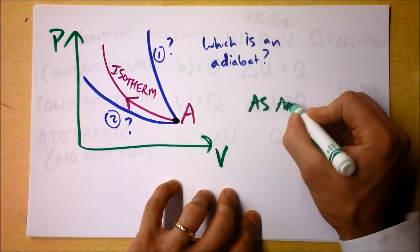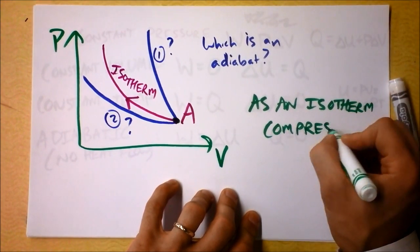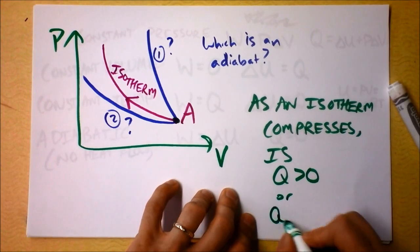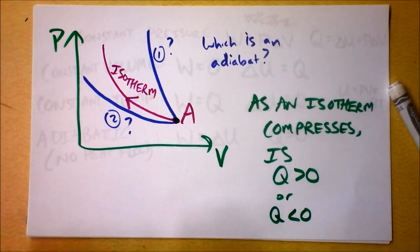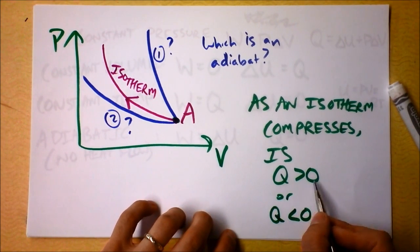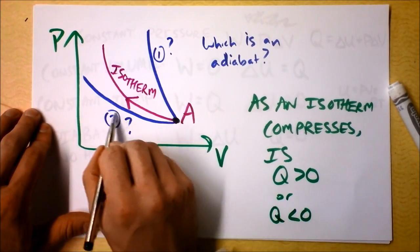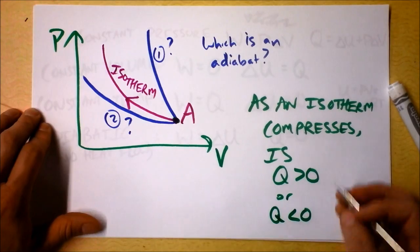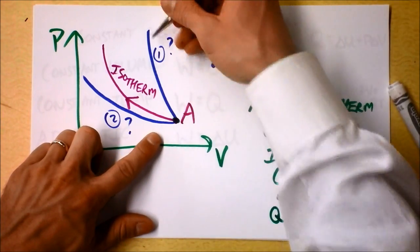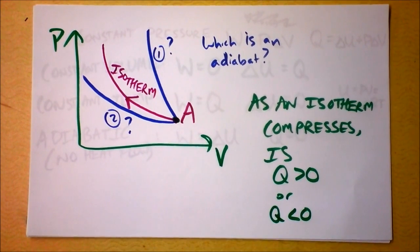As an isotherm compresses, is Q greater than zero or Q less than zero? What I'd like to say - if the heat goes into an isotherm as it compresses, then I'm not allowing any heat to go into it, and then it would be this path right here, it would be the cooler path. Path two is cooler for the adiabat. But if heat is leaving an isotherm as it is compressing, then it would be this steeper path. This would be the path for an adiabat. So think about that, maybe put your answer in the comments, and that's it.